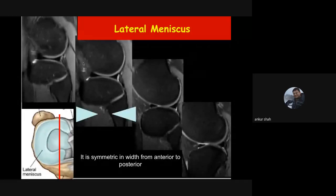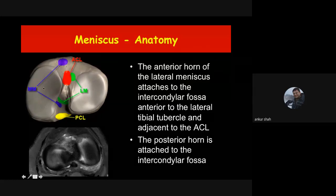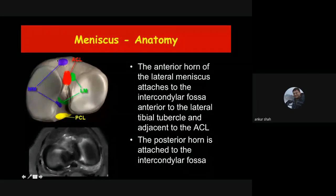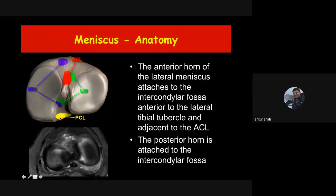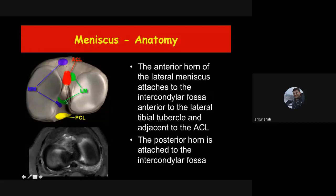For the lateral meniscus, both horns are almost symmetric — anterior and posterior horns are the same size. The medial meniscus has an open C-shape, with anterior and posterior attachments far apart. The anterior attachment of the medial meniscus is almost at the level of the joint capsule, while the posterior attachment is just anterior to the posterior cruciate ligament attachment. The lateral meniscus has a very tight C-shape, with anterior and posterior attachments very close together.